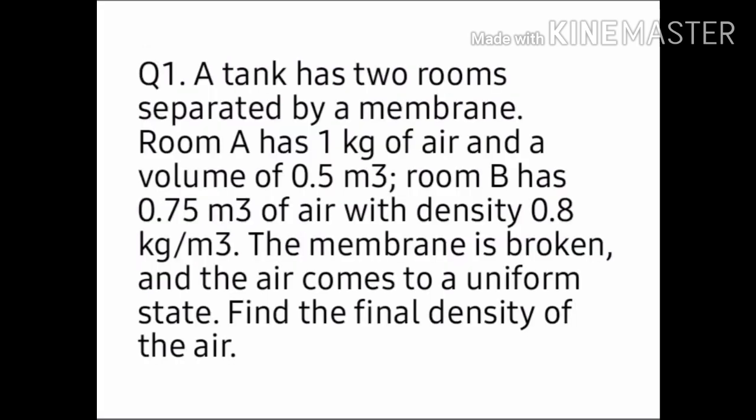And here's our given problem. A tank has two rooms separated by a membrane. Room A has one kilogram of air and a volume of 0.5 cubic meter. Room B has 0.75 cubic meter of air with density 0.8 kilograms per cubic meter. The membrane is broken, and the air comes to a uniform state. Find the final density of the air.